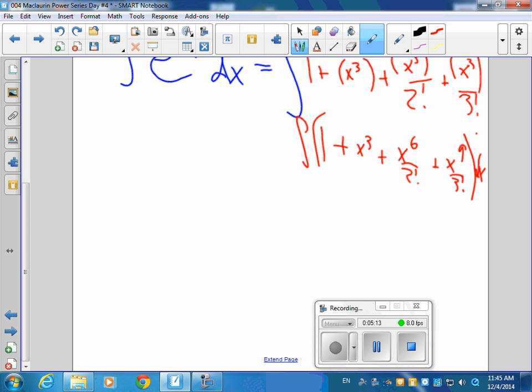And now you can take that antiderivative, which is x plus x to the 4th over 4 plus x to the 7th over 7 times 2 factorial plus x to the 10th over 10 times 3 factorial plus c. There's your antiderivative.